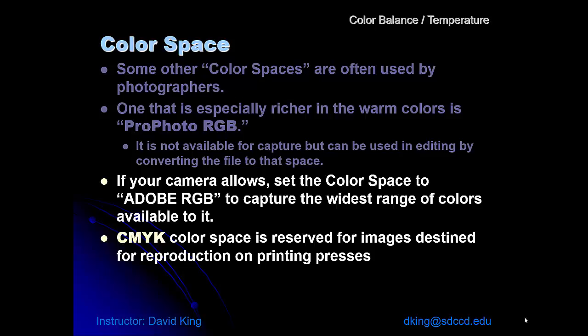Occasionally you'll see CMYK as a color space label. It's a real color space. It's cyan, magenta, yellow, and black, but it's reserved for images destined for reproduction on printing presses. If we were producing images for magazines, for brochures, for catalogs, then we're going to have to get concerned about CMYK space. For right now, don't worry about it. Put all of your effort into understanding RGB space.